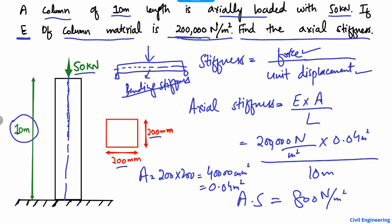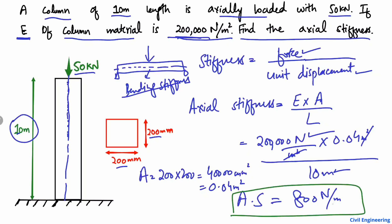To clarify the units: the square meters in the numerator and denominator cancel, so we are left only with newtons and meters. Therefore the axial stiffness for this column is 800 newton per meter, meaning 800 newtons of force is required to produce a unit deformation of one meter.